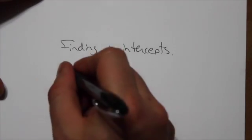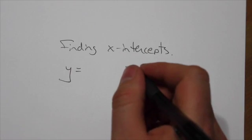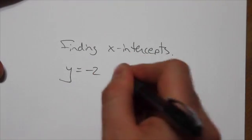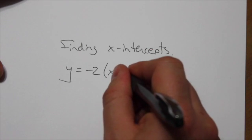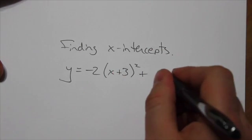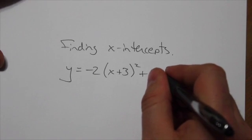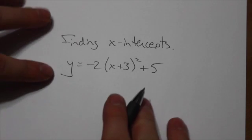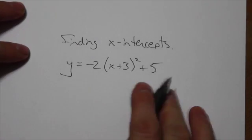So let's just make up something here. Let's say we've got, let's say y is equal to negative 2(x+3) squared plus, let's say, 5. Just need some numbers here. So here we've got a parabola in vertex form.